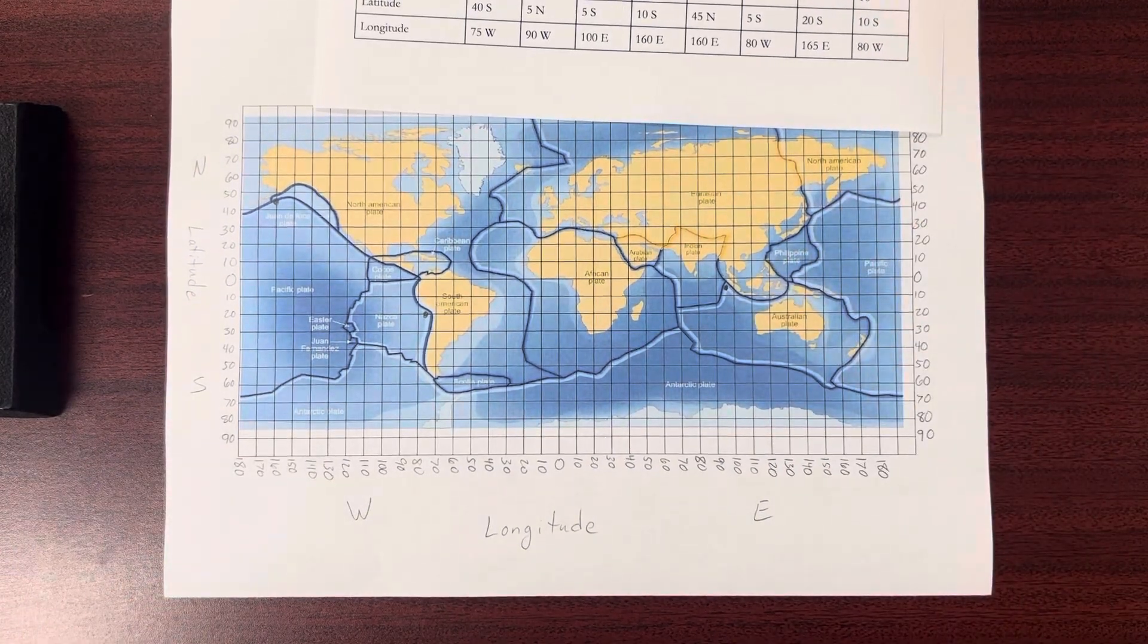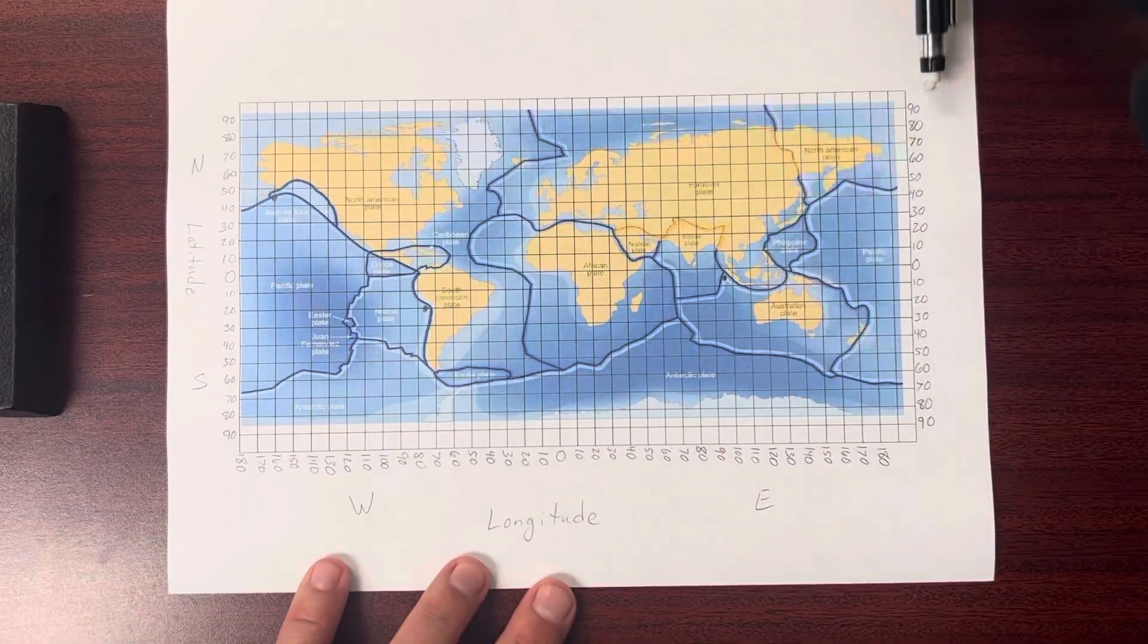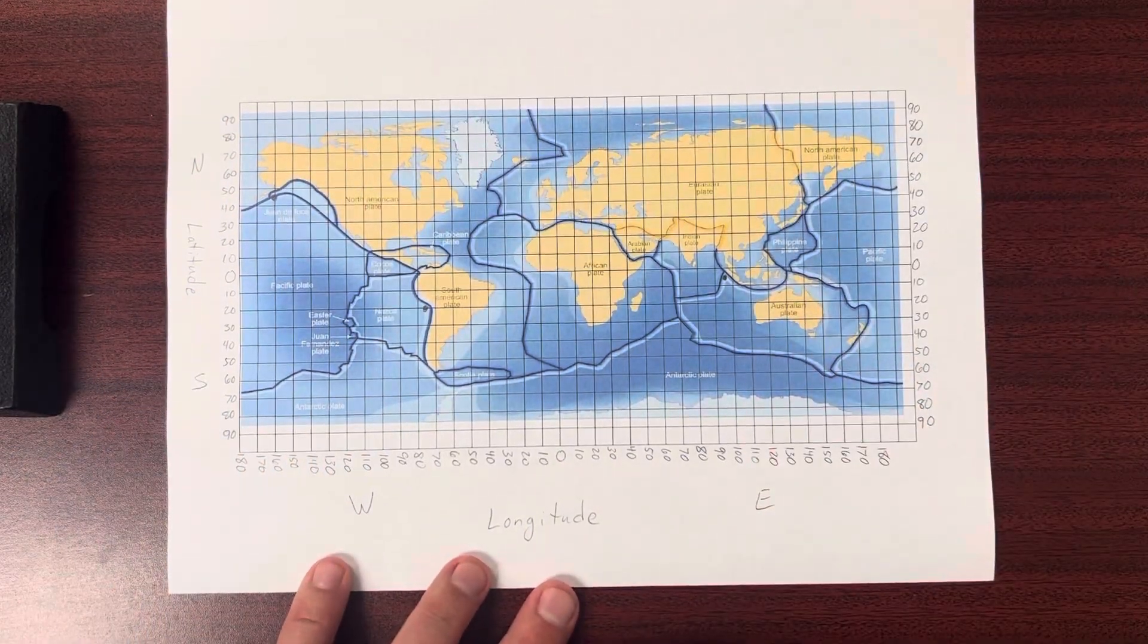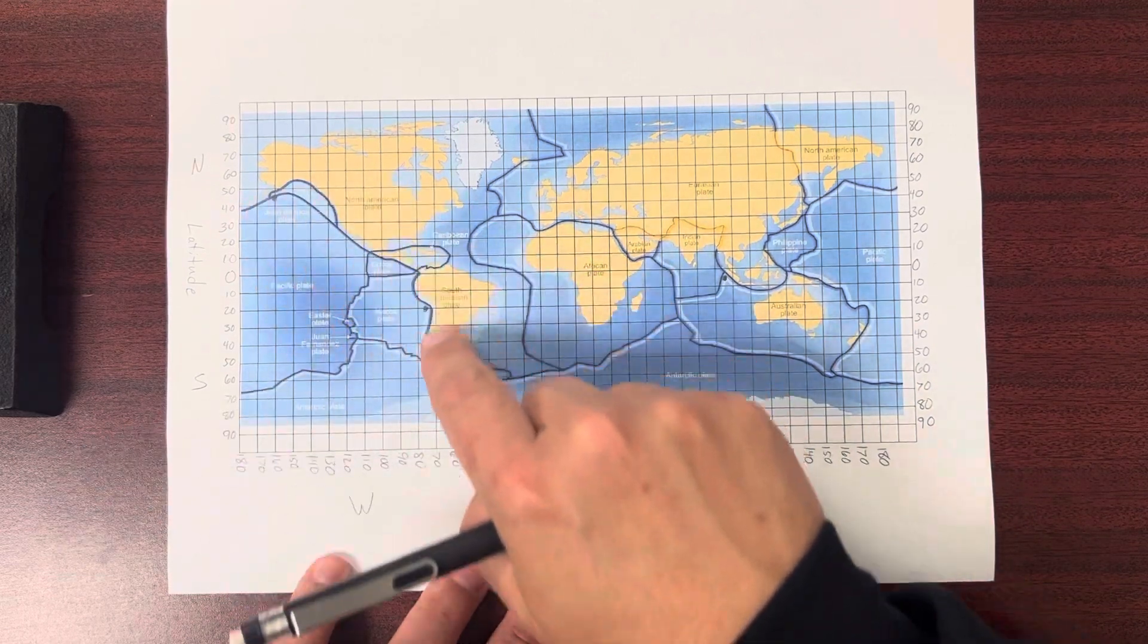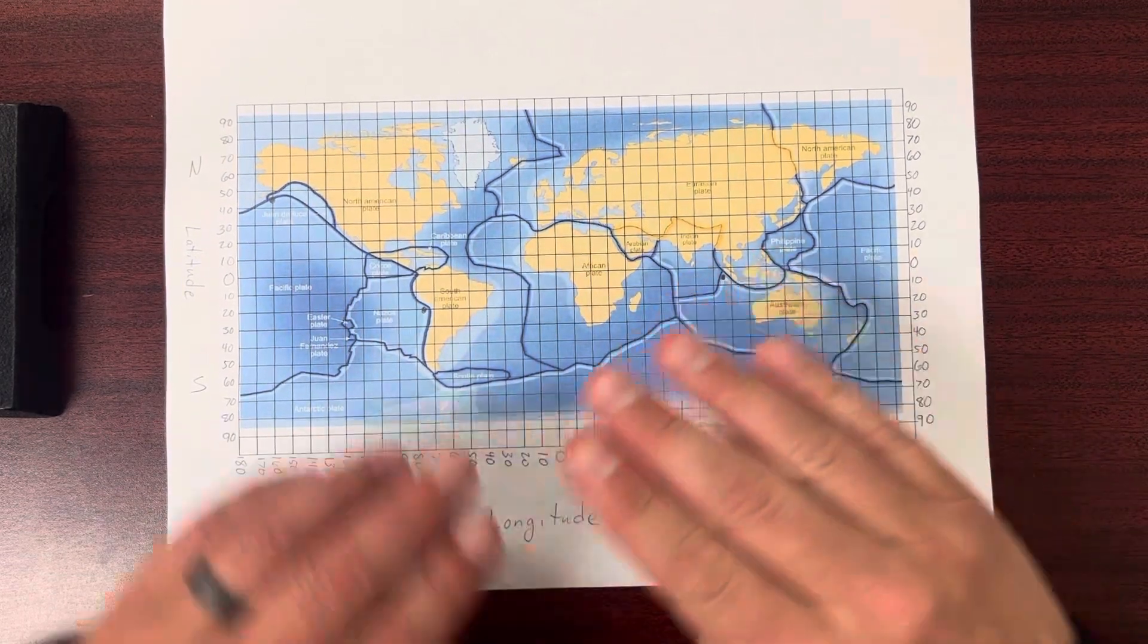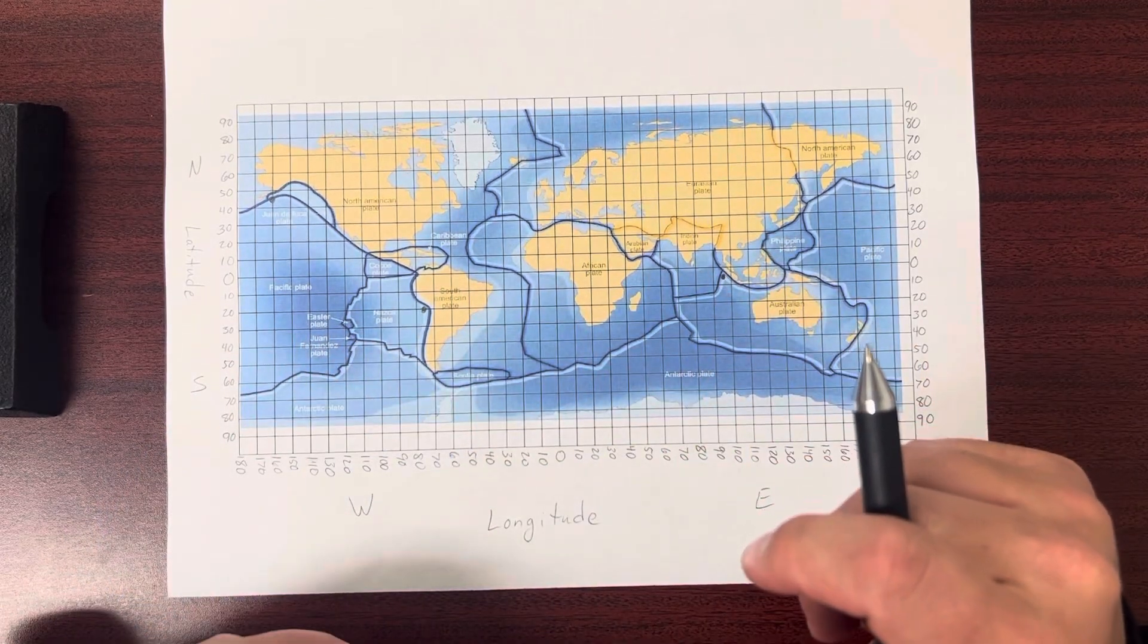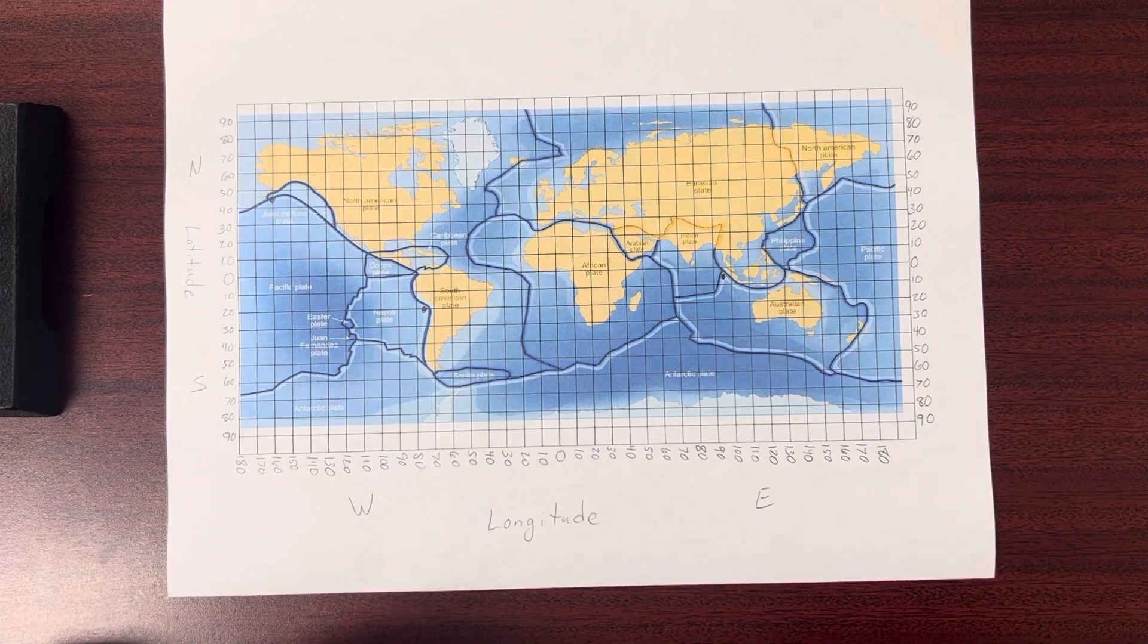You're going to do the rest of those. And what you should see is that there is a pattern that develops. Most of these major earthquakes are going to be along the plate boundaries because they're grinding against each other, causing these breaks in the rock. Okay. Hope this helps. Thanks. Bye.